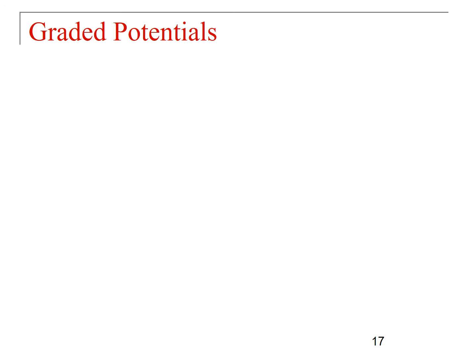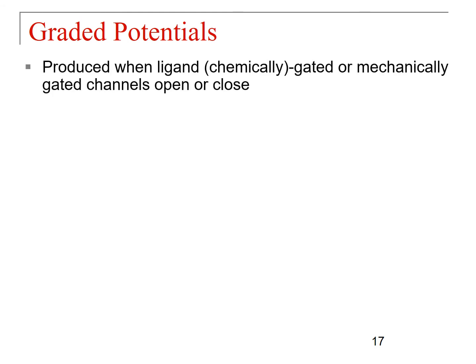Now let's get into graded potentials in more detail. These are produced when ligand — chemically gated — or mechanically gated channels open or close. We talked about different channel types: leak channels open at random, voltage-gated channels open in response to voltage, chemically gated channels open in response to a chemical binding, and mechanically gated channels open or close in response to some sort of pressure.